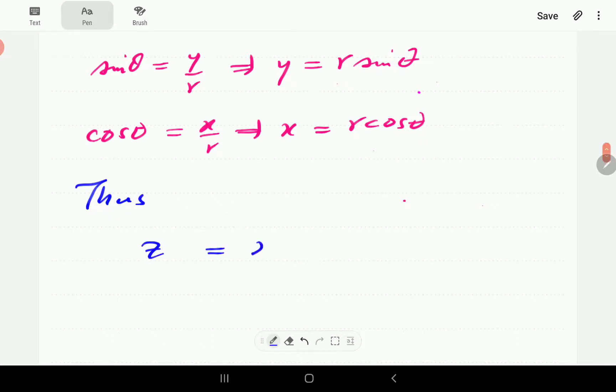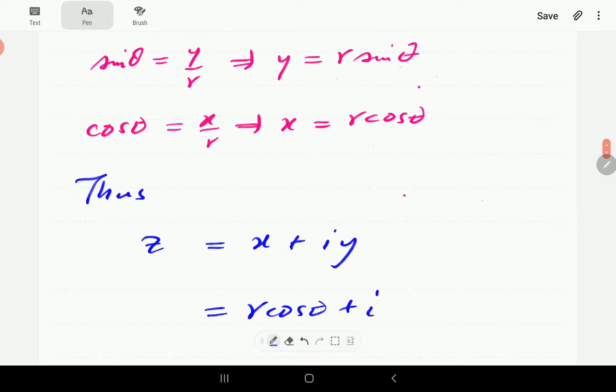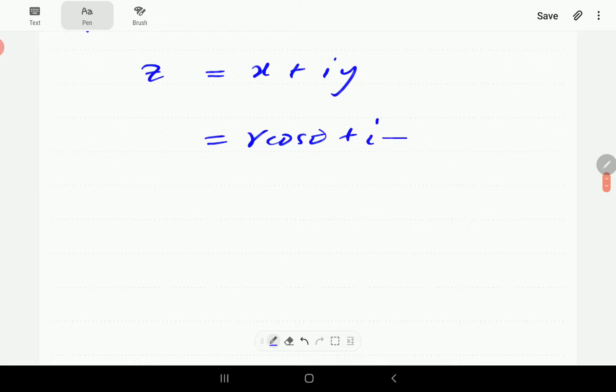So z equals x plus iy. We can rewrite in terms of r and theta. So from here, you can recall that x is r cosine theta. So in the place of x, we're going to plug in r cosine theta. Then y is r sine theta. So going to write i r sine theta.